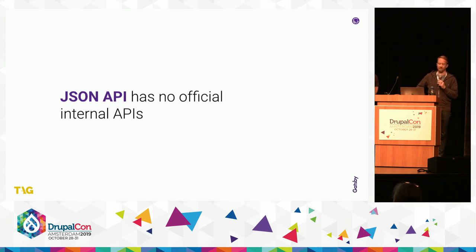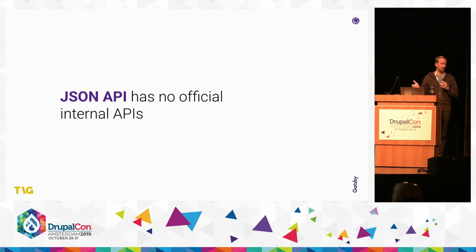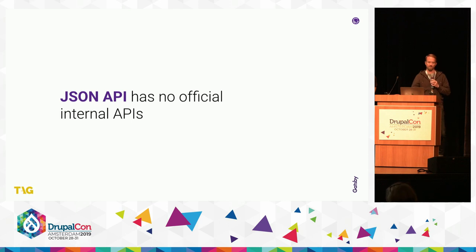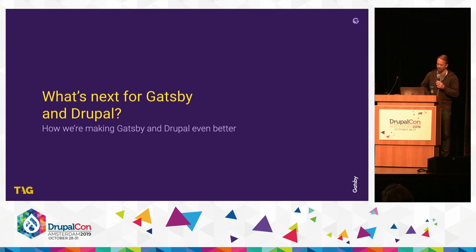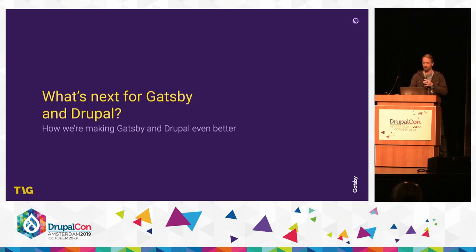Another challenge is that JSON API has no internal APIs you're technically supposed to be using today. The only recommended way to get JSON API formatted data for an entity is to make an HTTP request over the wire. But if we're using it as an internal Drupal module, that's not ideal for us. So we're basically having to stay current with JSON API as some of the internals are shifting and stabilizing. But that's a temporary situation.